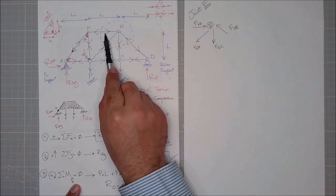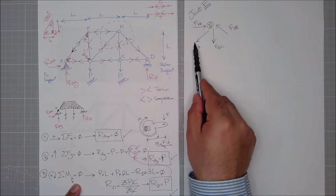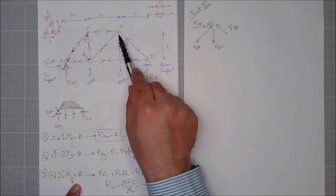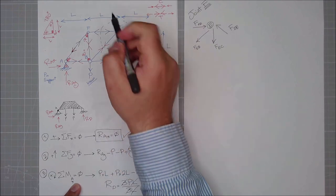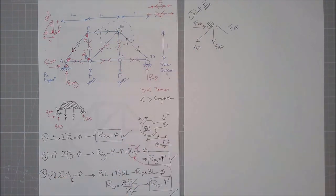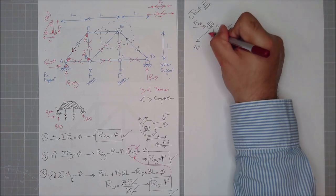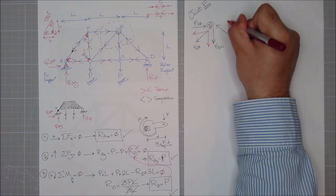This force coming in, this force going out, this force going out, this force coming in — at joint E. I'm just considering joint E now. I have inclined forces, so quickly I draw the 2D forms of them.